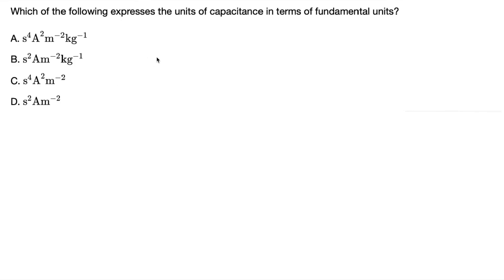Which of the following expresses the units of capacitance in terms of fundamental units? So capacitance is equal to charge over voltage. And charge is equal to current times change in time. And voltage is equal to work done by electric field.